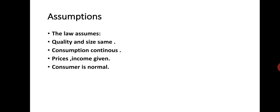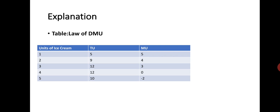The important assumptions under which the law of DMU works: the consumer is rational in nature; utility is cardinal; utility is independent; marginal utility of money remains constant. Additional assumptions are that the quality and quantity of the goods under question should be the same; consumption should be continuous — for example, eating ice cream or apples continuously; prices and income are already known; and the consumer is normal, in a good state of health and mentally fit.